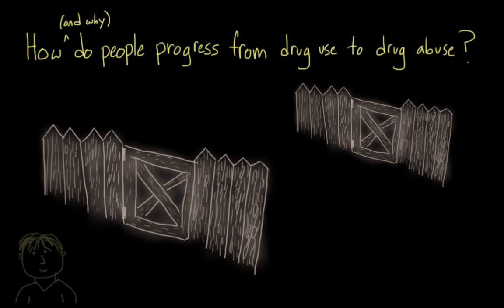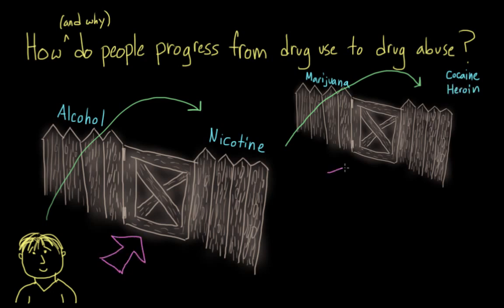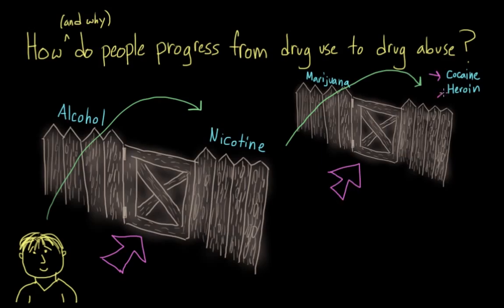So here we have John. When John was a teen, or maybe a preteen, he started experimenting with alcohol and cigarettes. And from there, maybe he starts smoking pot, he starts using marijuana. And eventually, he winds up using drugs like heroin and cocaine. So here, alcohol and cigarettes would be a gateway that leads to marijuana use, which is itself a gateway for heavier drug use. John's early experience with less dangerous substances led him to use more dangerous substances later on.